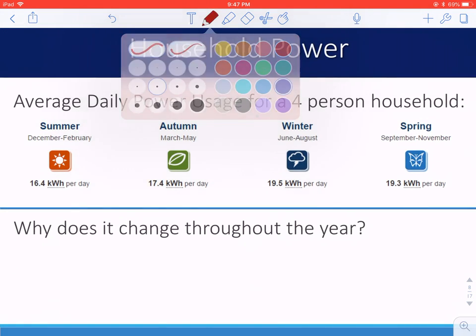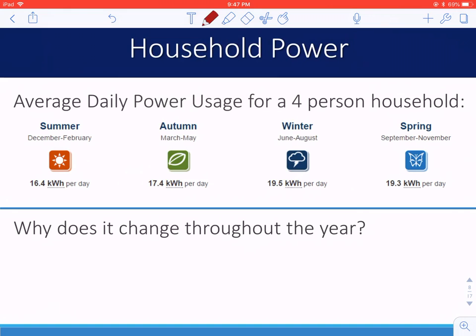If you look at power usage for a four-person household throughout the year, you'll notice that the amount of power per day changes depending on the season. This graphic came from an energy company in Australia. So summer is December to February, where winter is June to August. Don't let that throw you. You can still notice that winter, at least in this location, they use much more power than they do in the summer.